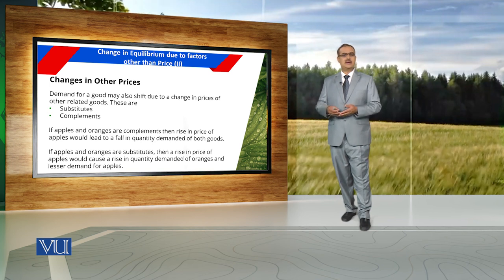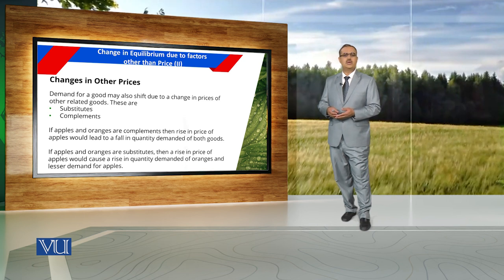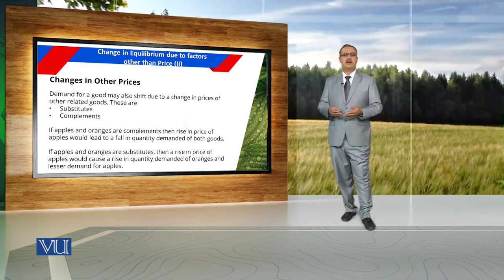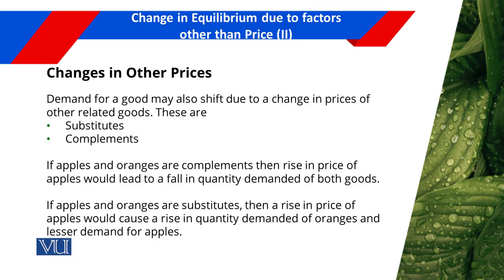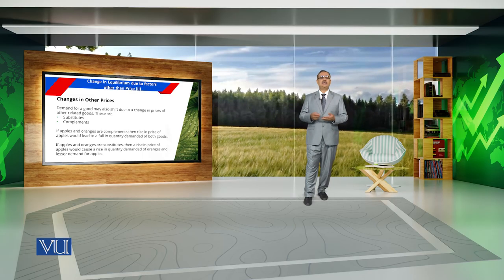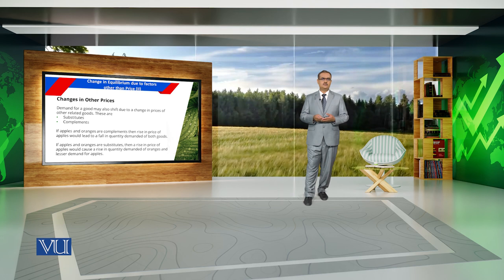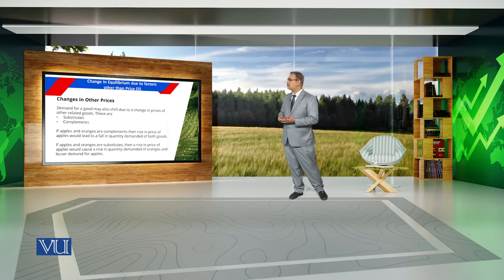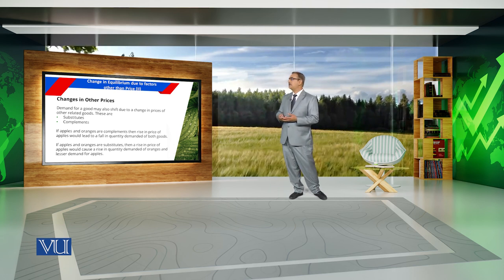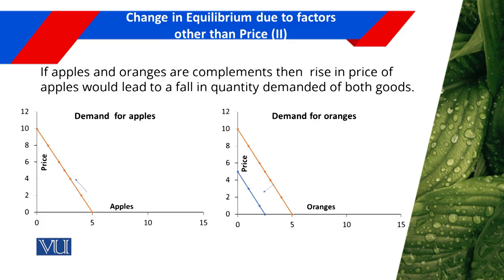If we replicate this concept with reference to our example where the consumer is using only apples and oranges to maximize his satisfaction, and we consider apples and oranges as complements, then a rise in the price of apples would lead to a fall in quantity demanded for oranges. In fact, there is a fall in quantity demanded for both commodities. But if we assume apples and oranges are substitutes, then a rise in the price of apples would cause a rise in quantity demanded for oranges and a decrease in demand for apples.